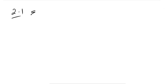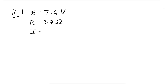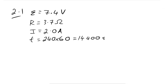Question 2.1: We have an EMF of 7.4 volts with no internal resistance, so it's just a voltage. The heating element has a resistance of 3.7 ohms. Current is 2 amps and time is 240 minutes, which we convert to 14,400 seconds.